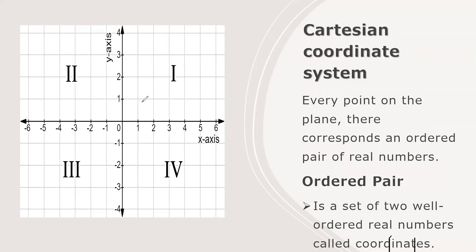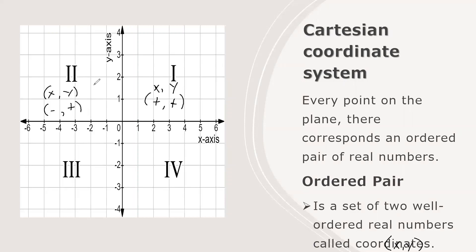Let us identify the sign of the coordinates in each quadrant. In Quadrant 1, the sign of x is positive and the sign of y is positive — x moves to the right, so all numbers to the right are positive, and y moves up, so all numbers up are positive. In Quadrant 2, the sign of x is negative since x moves to the left, and y is positive since y moves up.